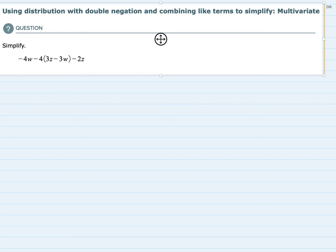Hello. In this video, I'll be helping you with the ALEKS problem type called using distribution with double negation and combining like terms to simplify multivariate.